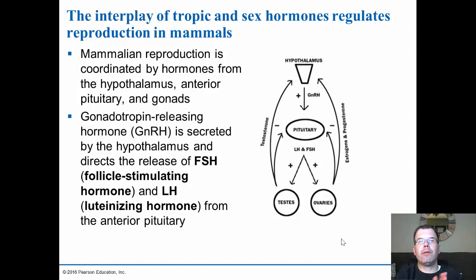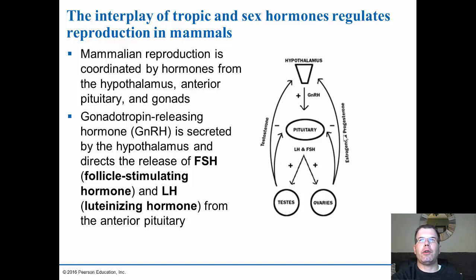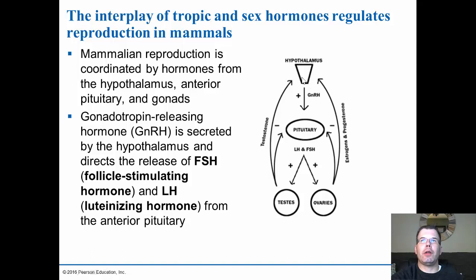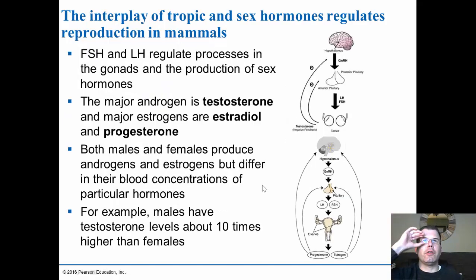Hormones regulate the release of sperm and oocytes. Mammalian reproduction is coordinated by hormones from the hypothalamus, anterior pituitary, and gonads. The hypothalamus secretes gonadotropin-releasing hormone (GnRH), which triggers the anterior pituitary to release LH (luteinizing hormone) and FSH (follicle-stimulating hormone). These stimulate the testes and ovaries to produce testosterone, estrogens, and progesterone, which then provide negative feedback, inhibiting further LH and FSH production.